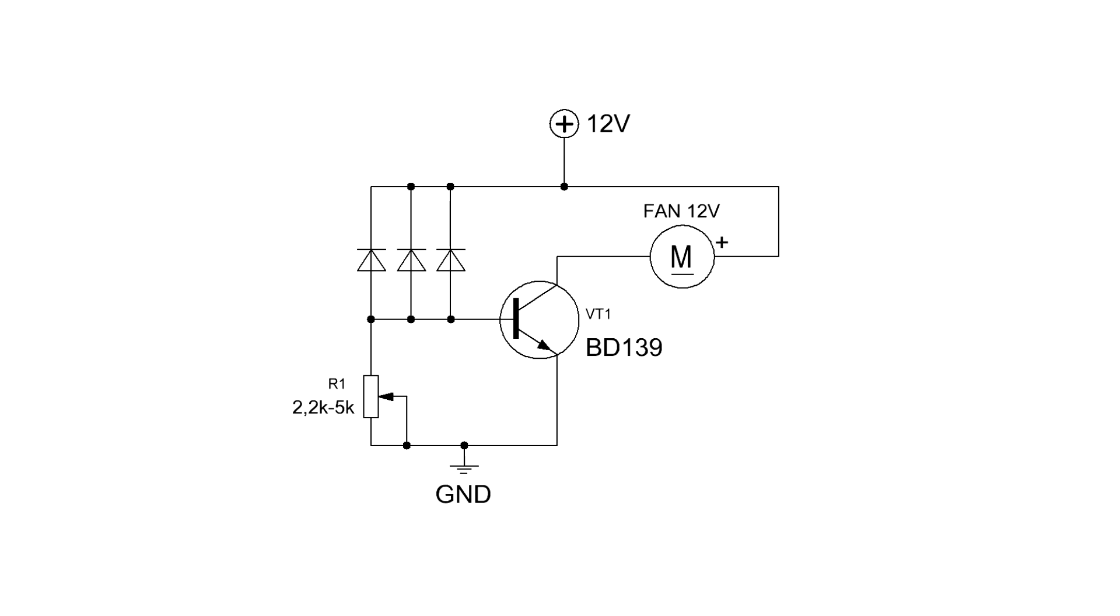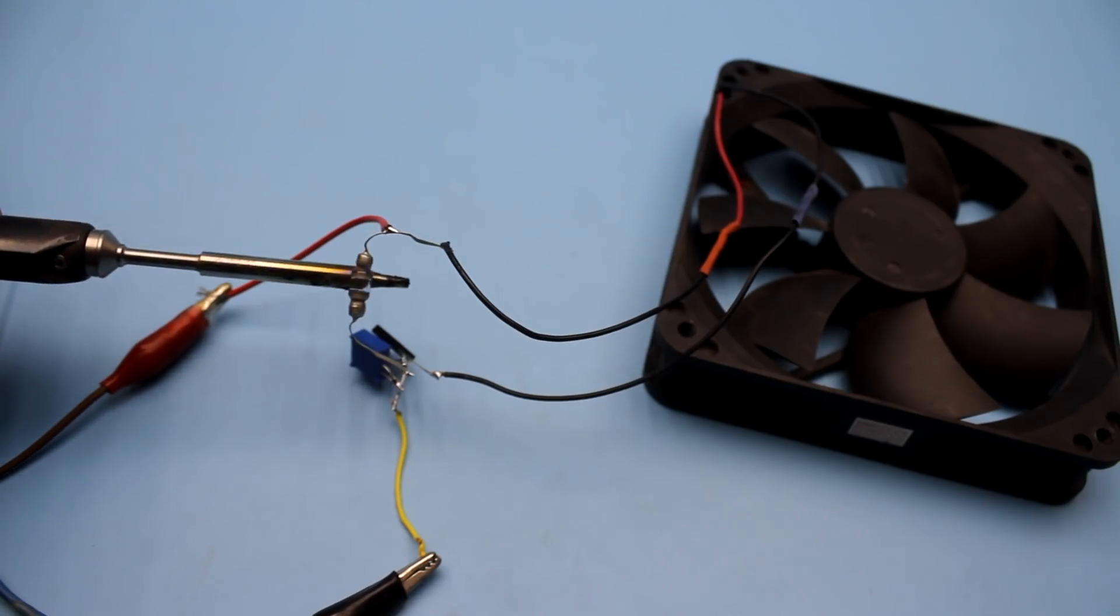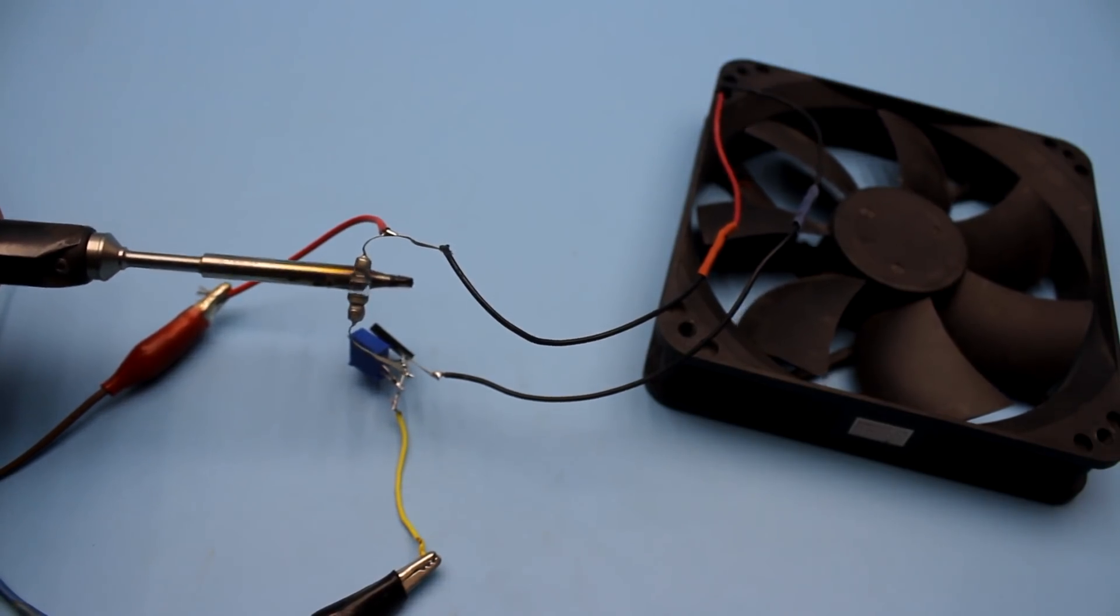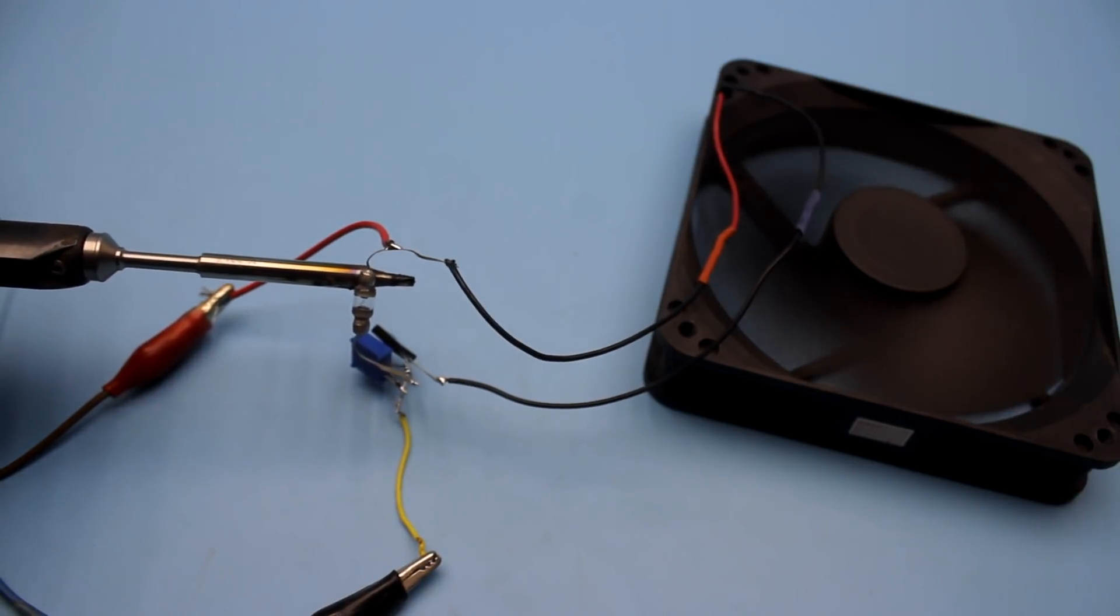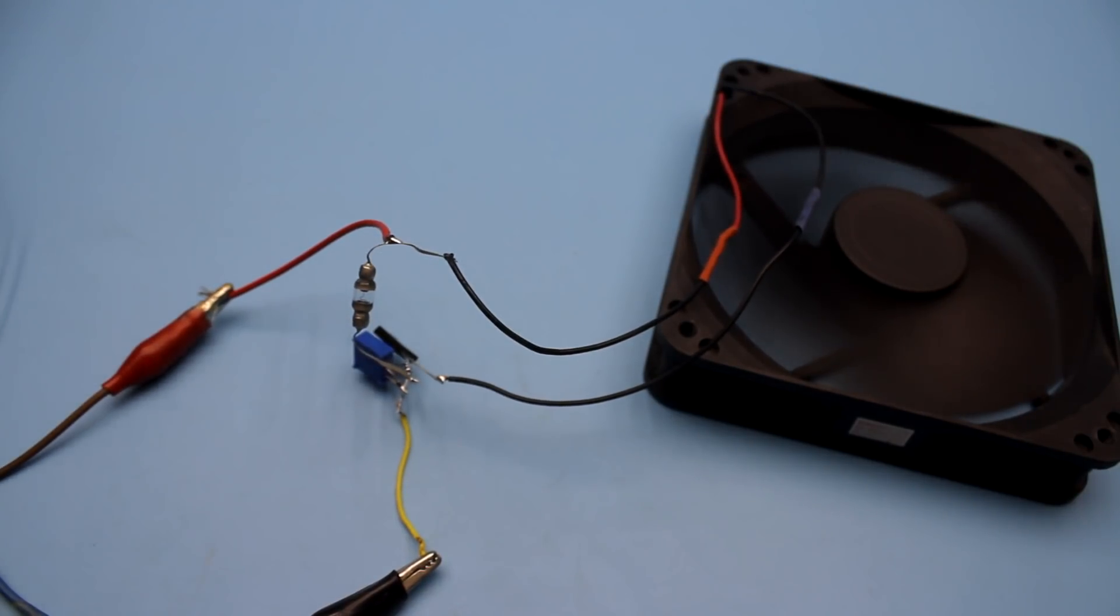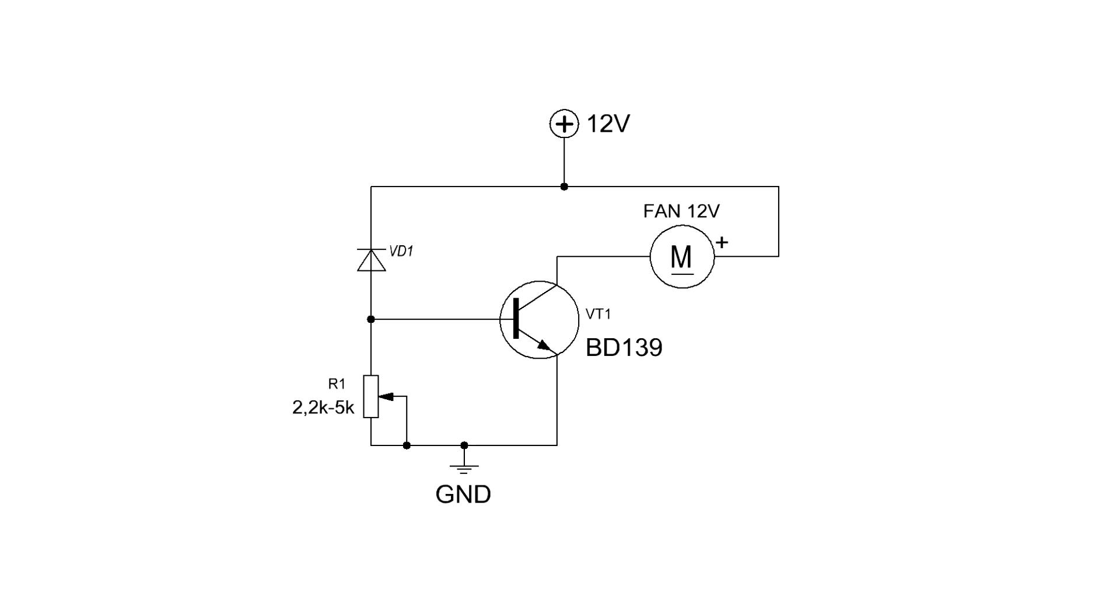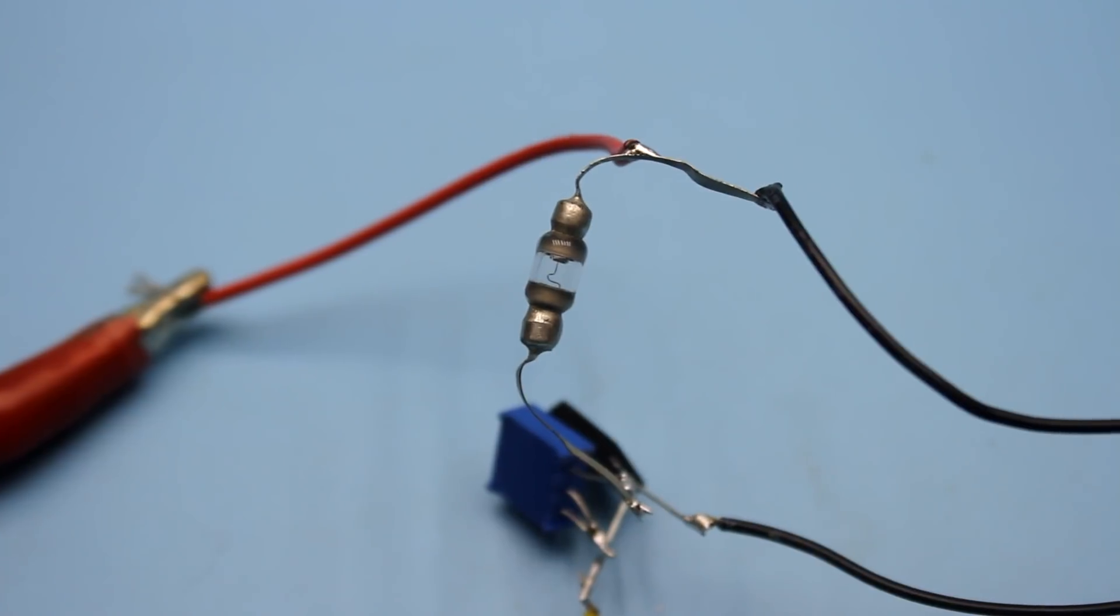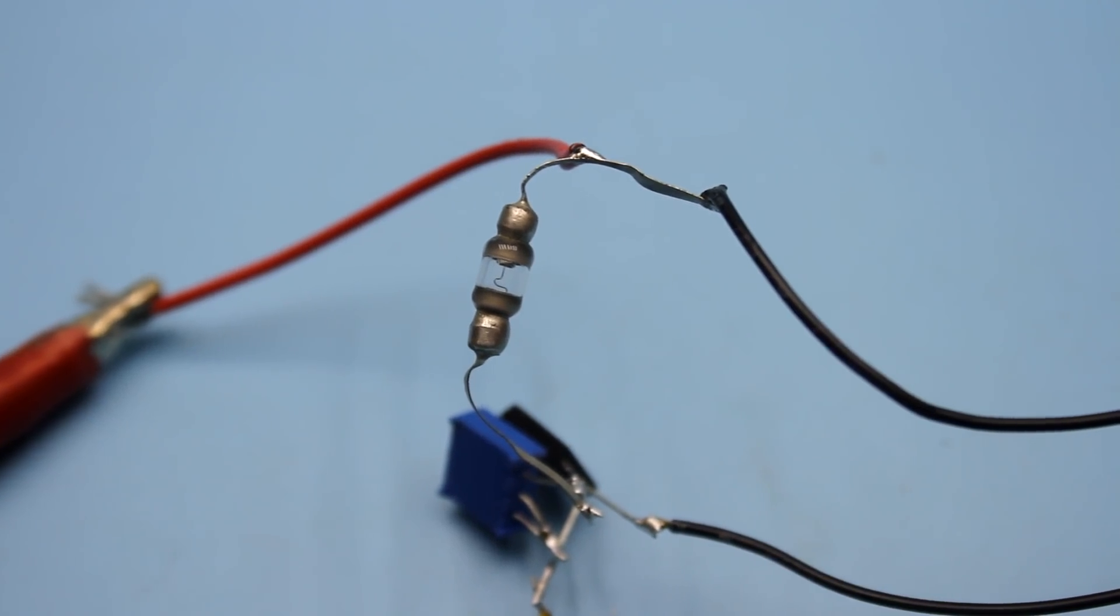But this drawback can be used in our next circuit, where the thermistor is replaced by germanium diodes. Several parallel connected diodes will allow for more extensive monitoring of the heated area. But you can also use only one diode. The principle of operation of the second doesn't differ from the previous.